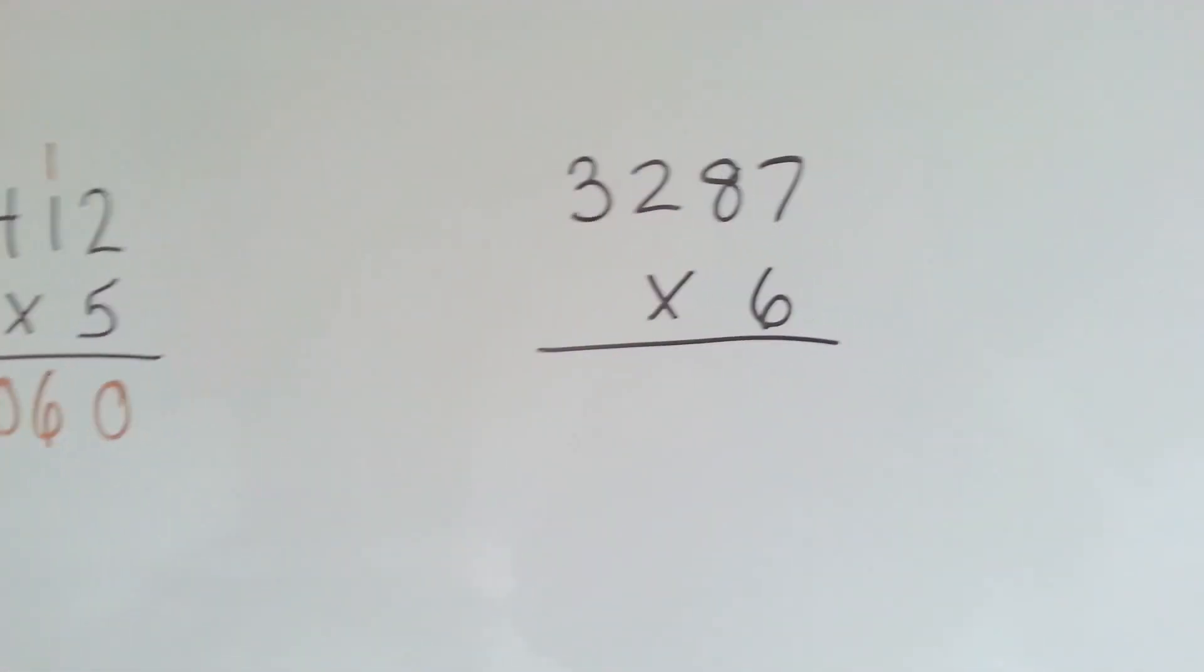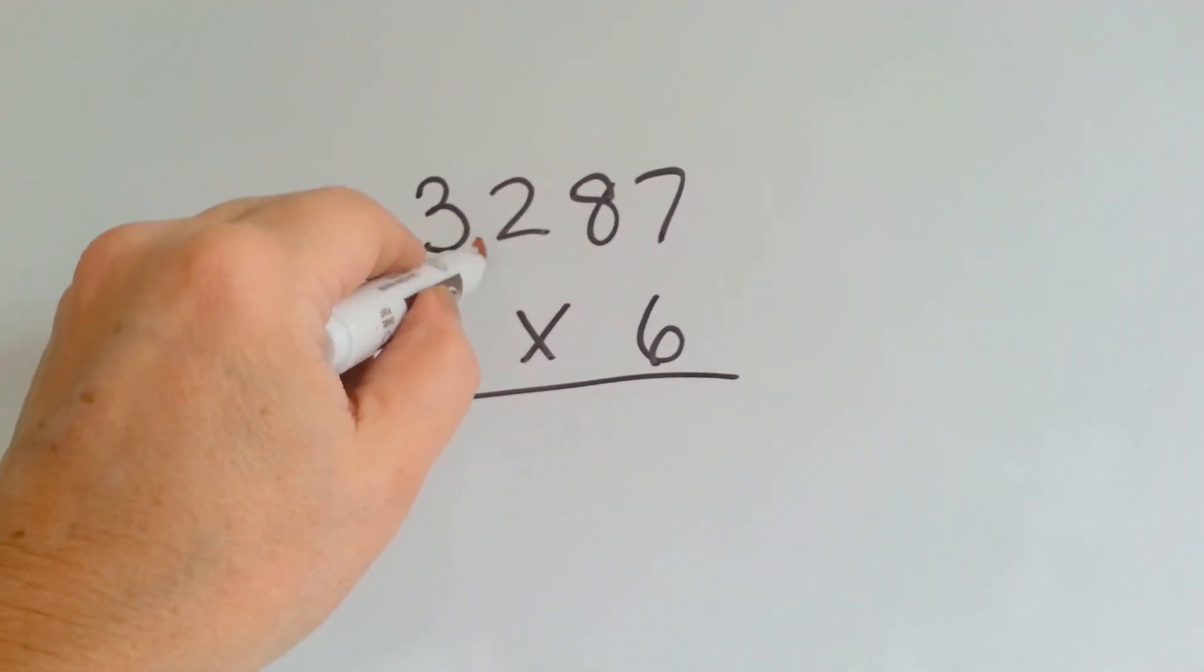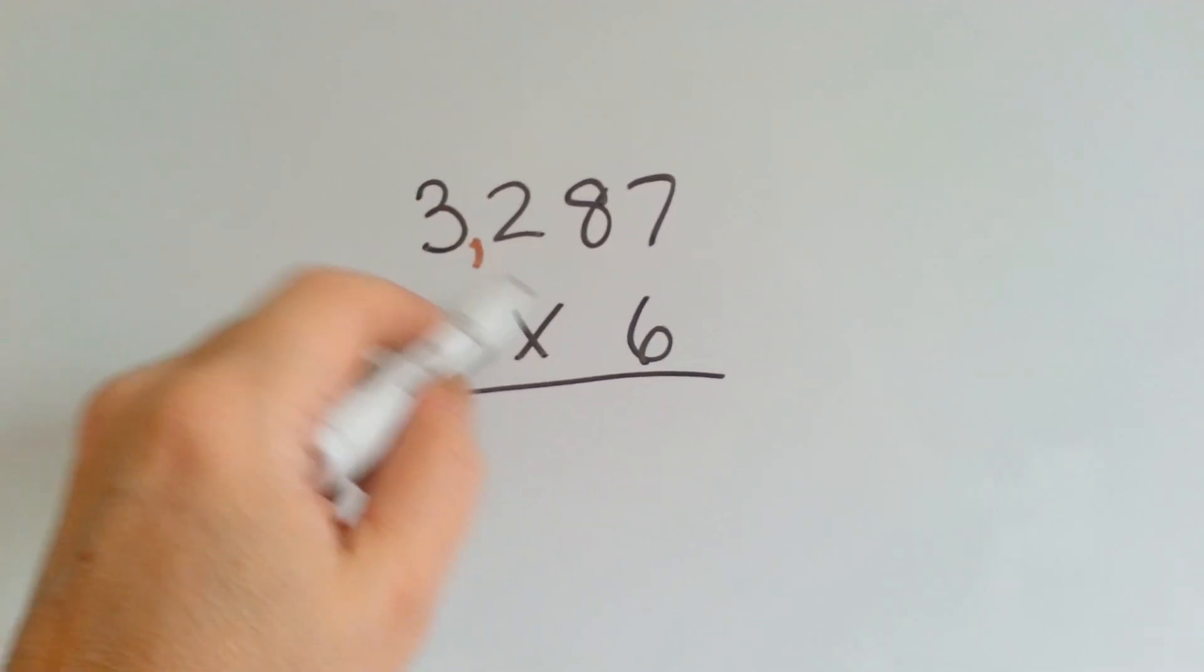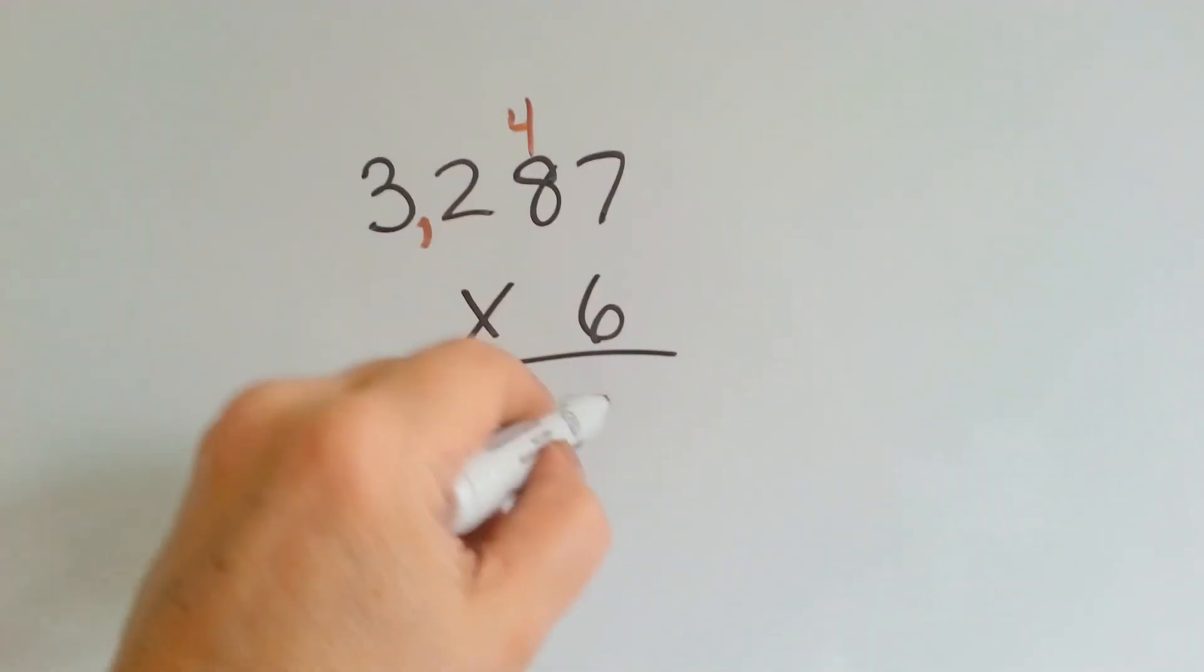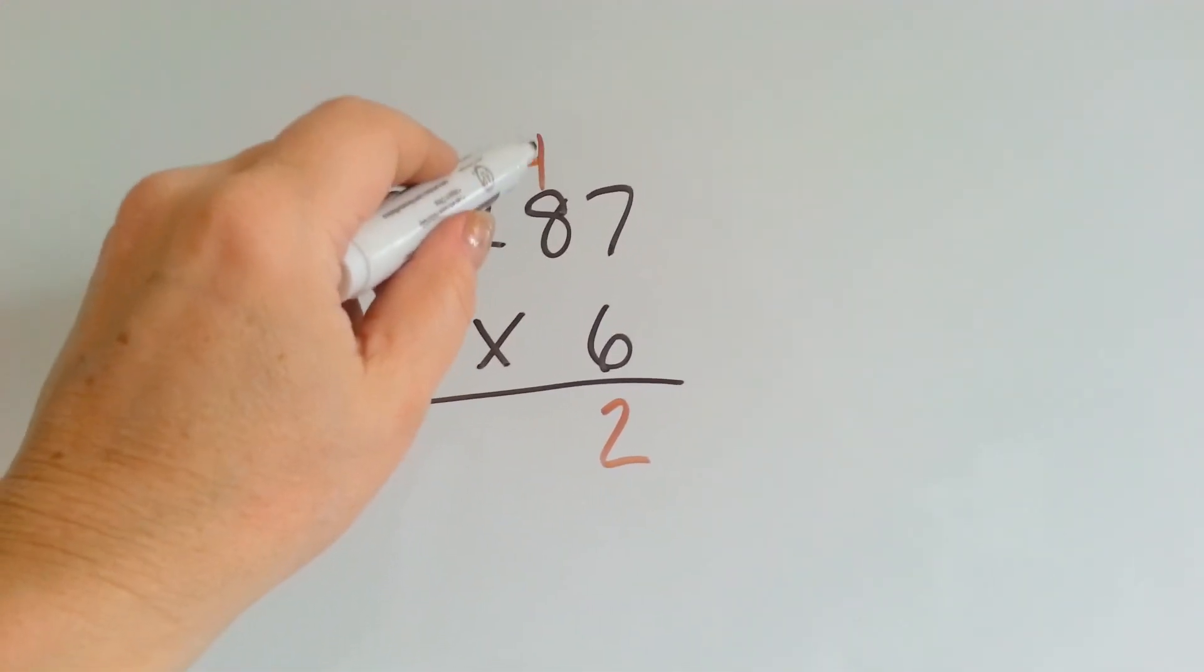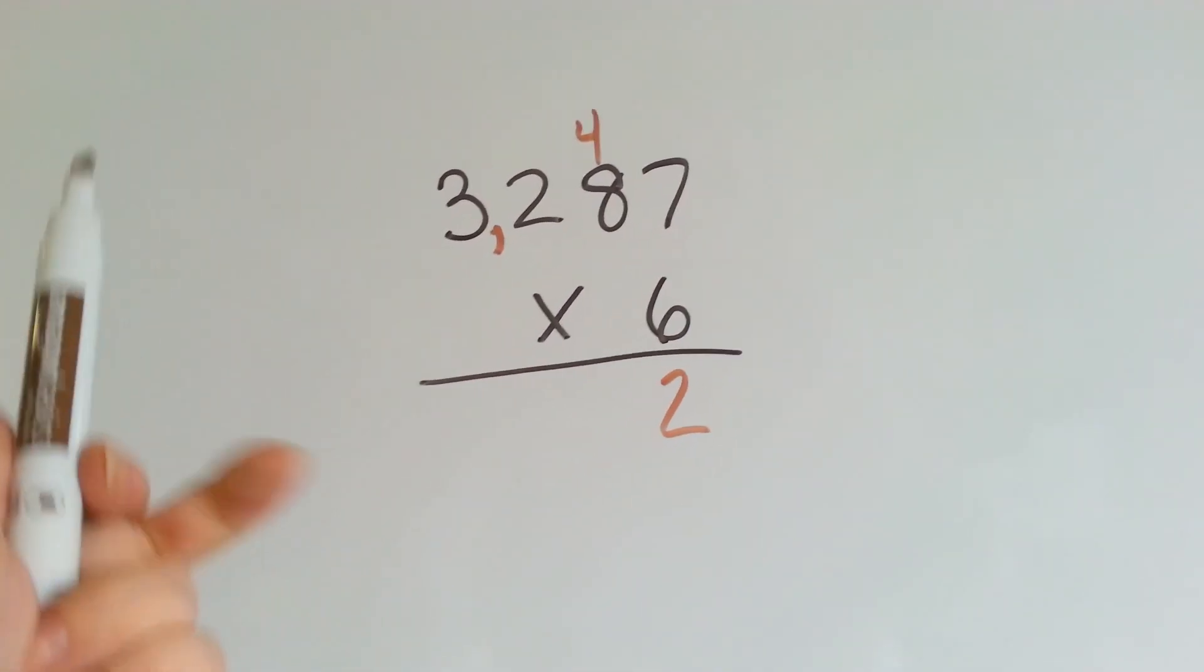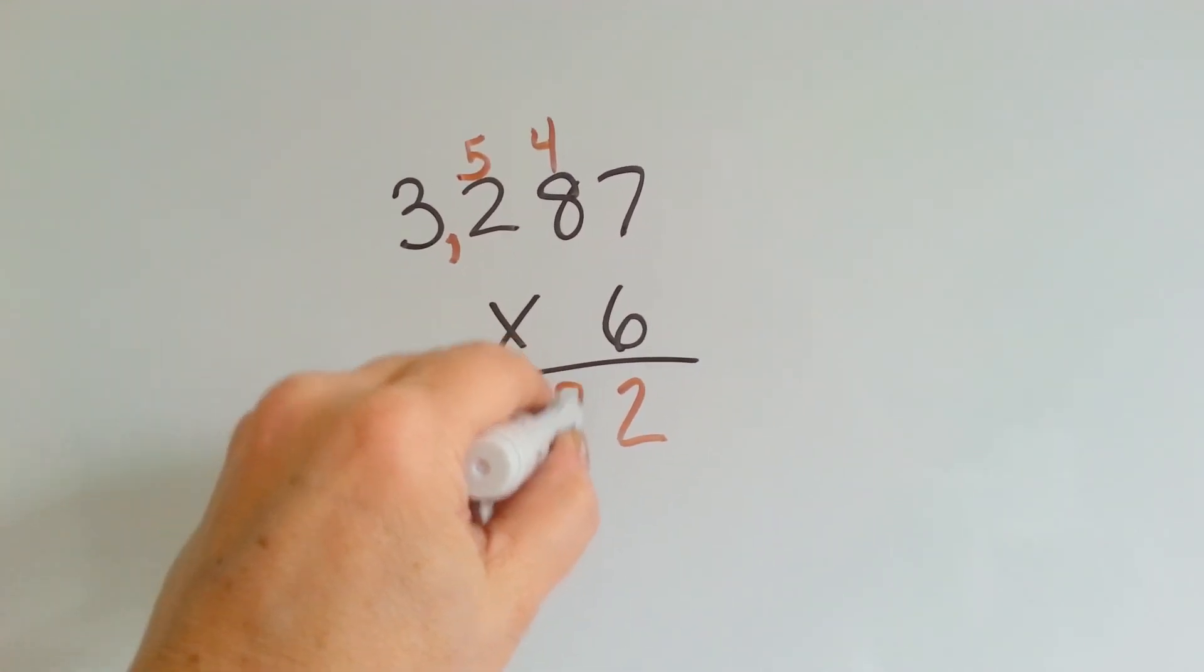One last one. We've got 3,287 times 6. We start with the ones and slowly fan over. 6 times 7 is 42. We carry over the 4 and put the 2 down. 6 times 8 is 48, plus the 4 is 52. Carry over the 5 and put the 2 down.